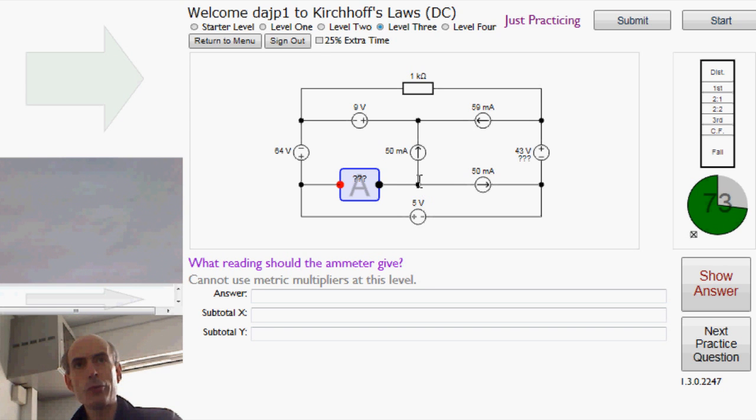Total current flowing out is 50 milliamps this way, and 50 milliamps this way. So there must be 100 milliamps flowing this way. That's from the red to the black, so that would be a positive current.